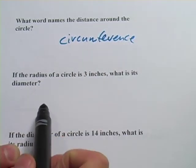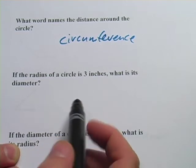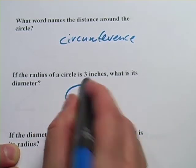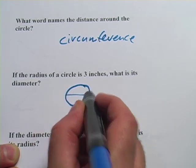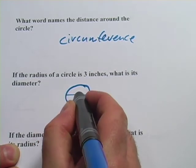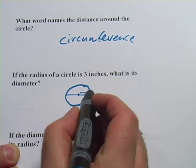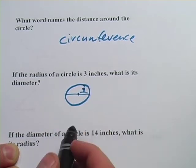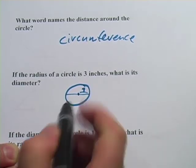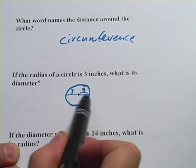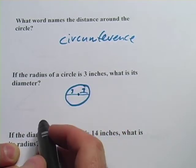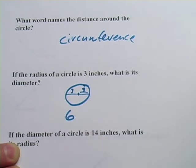The next one says, if the radius of a circle is 3 inches, what is its diameter? So just to remind you again, the diameter is all the way across. The radius is just half that distance. So if this radius is 3, while the other radius on the other side is also going to be 3, so the diameter is going to be 3 plus 3, or 2 times the radius. So the diameter will be 6.